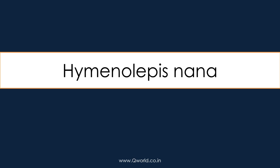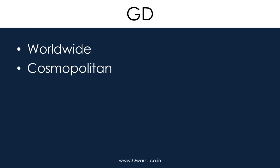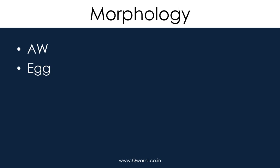Let us learn about Hymenolepis nana, common name dwarf tapeworm. Geography and distribution: worldwide, cosmopolitan. Habitat: small intestine. Morphology: two forms — adult worm and egg, as well as larval form.